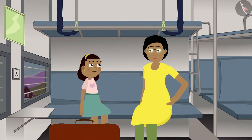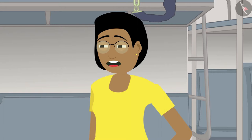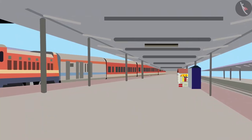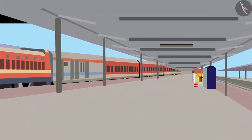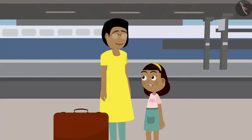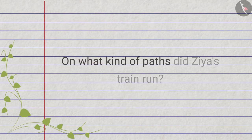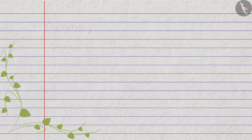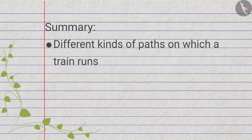In this way it becomes night and Zia's destination is about to arrive. Her mother says, 'Come on Zia, let us gather our luggage — our station will arrive soon.' Zia agrees to help. After some time Zia's station arrives and she gets off the train with her mother. Summary: in this video we learned about the different kinds of paths on which a train runs, and about level crossings, bridges, and tunnels.